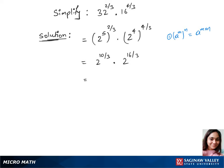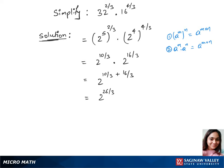Now we will use rule 2 here and write this as 2 power 10 over 3 plus 16 over 3. We can simplify this to 2 power 26 over 3.